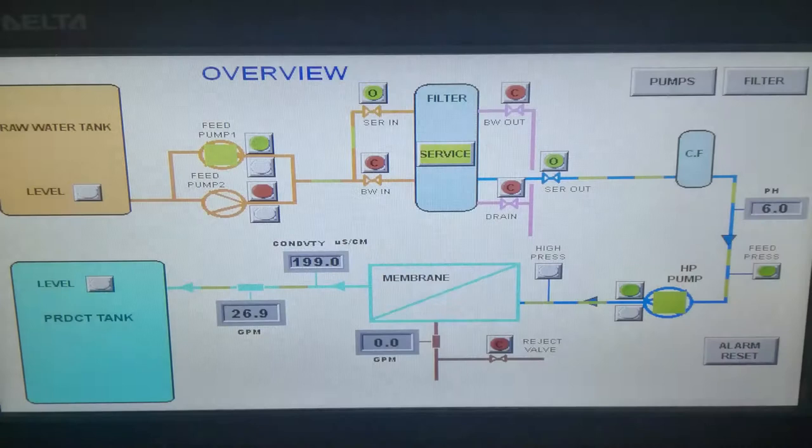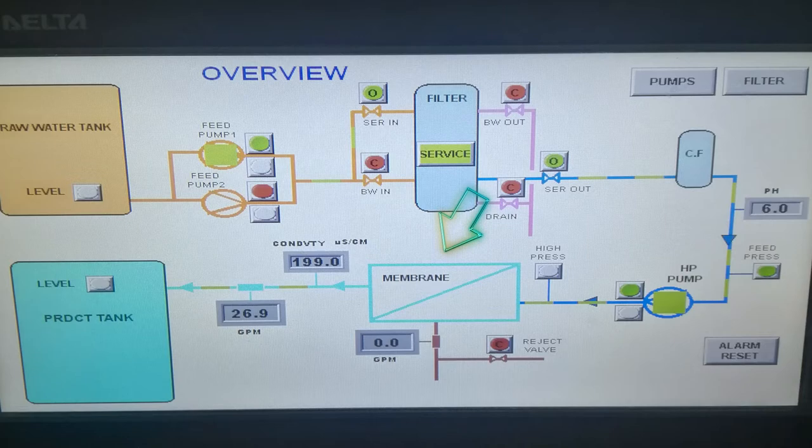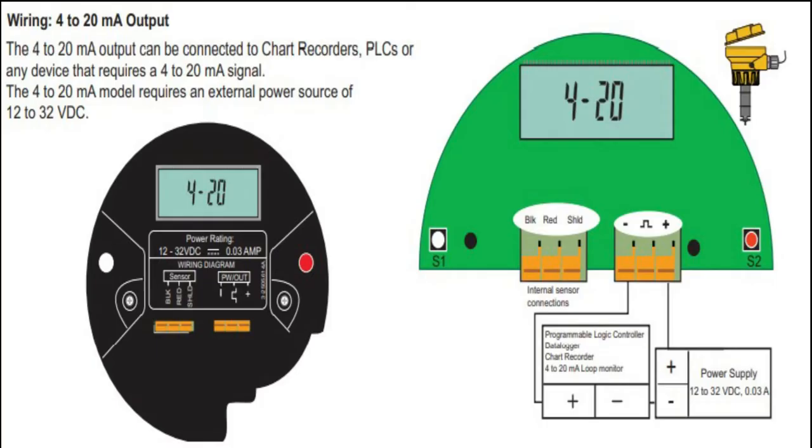On the HMI flow chart, the flow sensor was installed right after the reverse osmosis unit. Since the system is working, the flow sensor should send signal to the PLC to display the gallon per minute value.